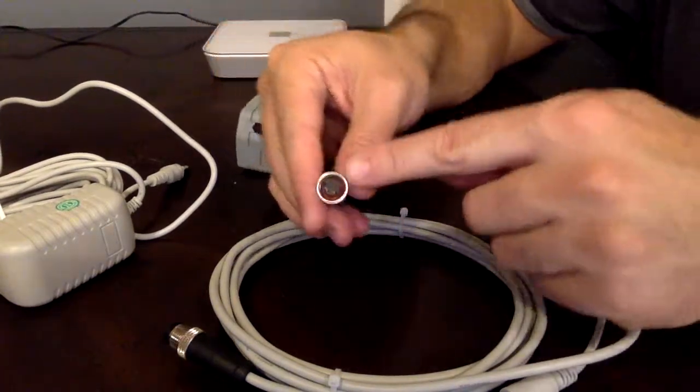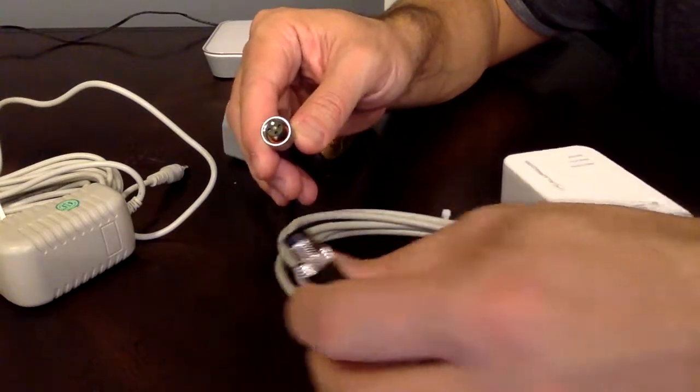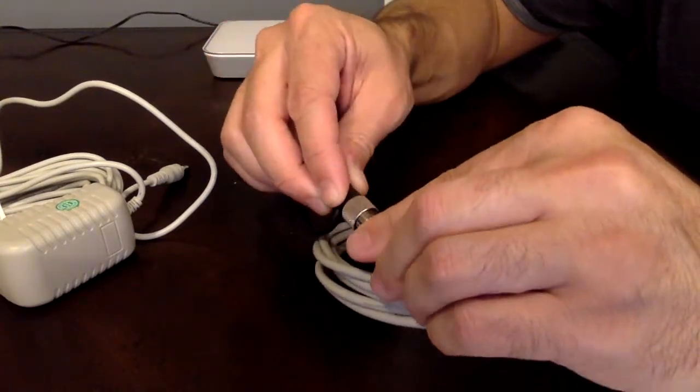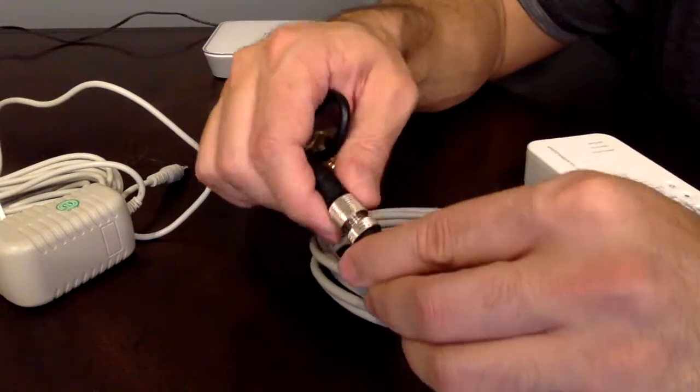Next you connect this end to this end of the control mechanism. The pins line up a certain way and then you just screw it shut like this.